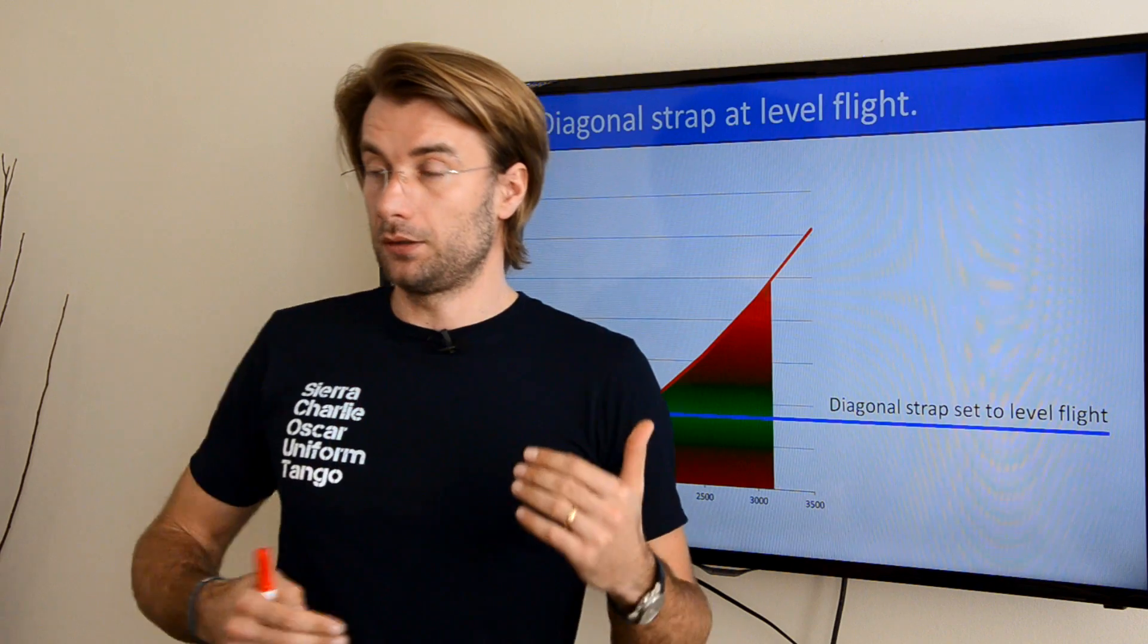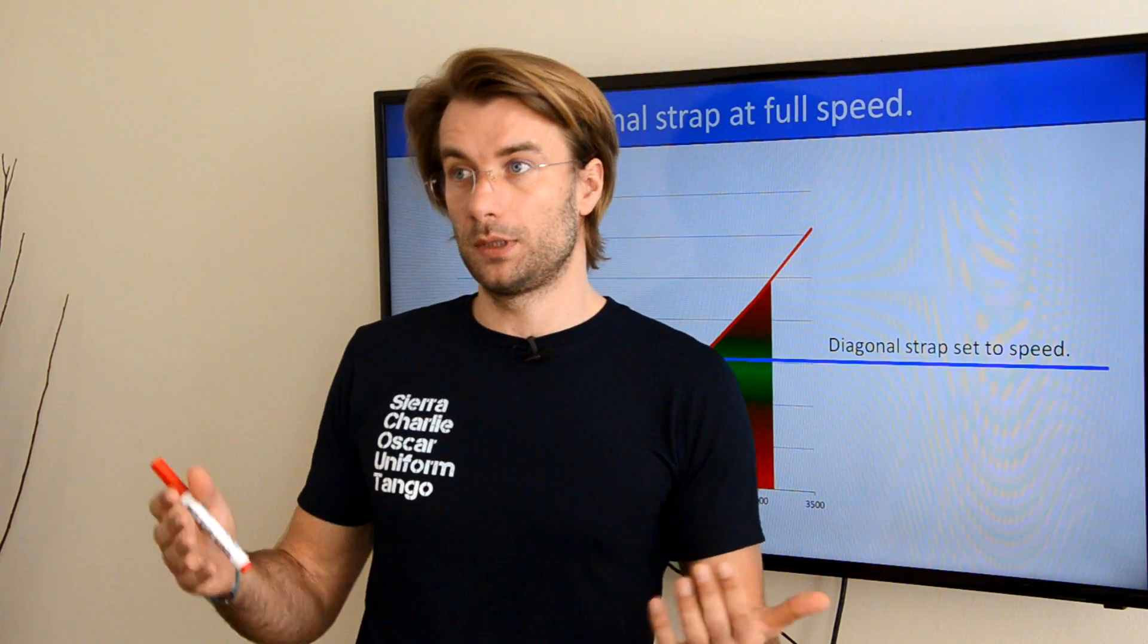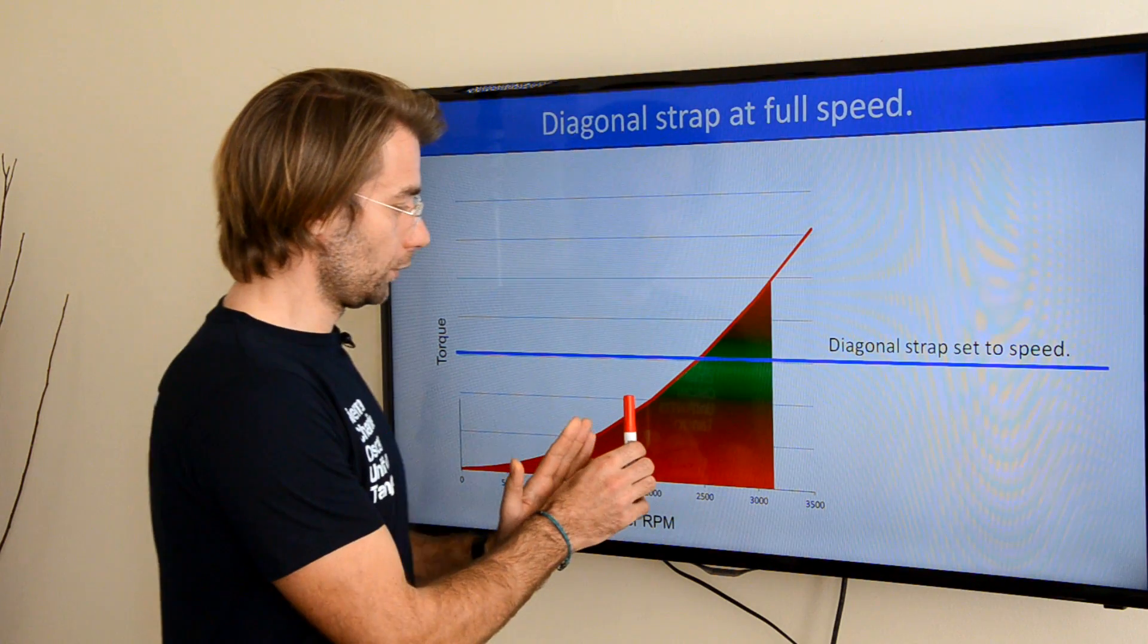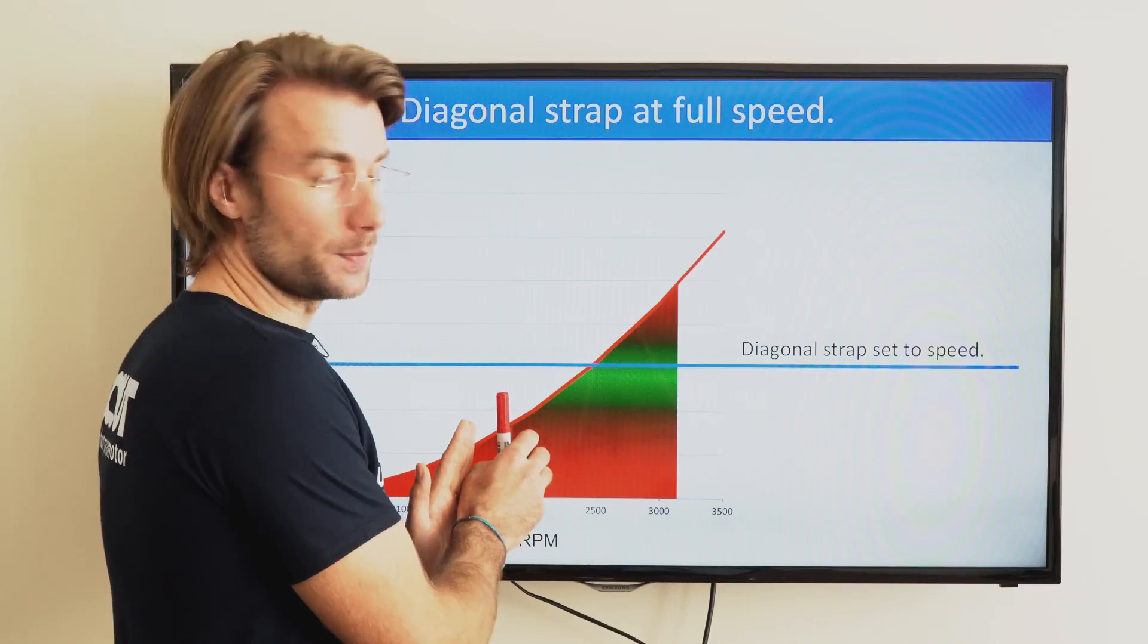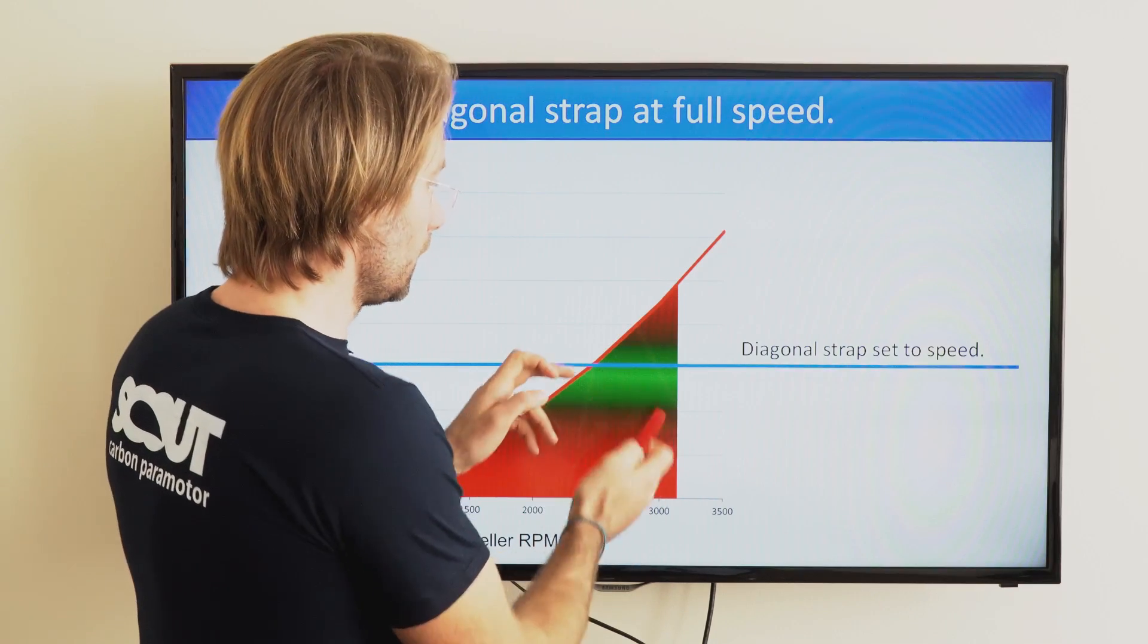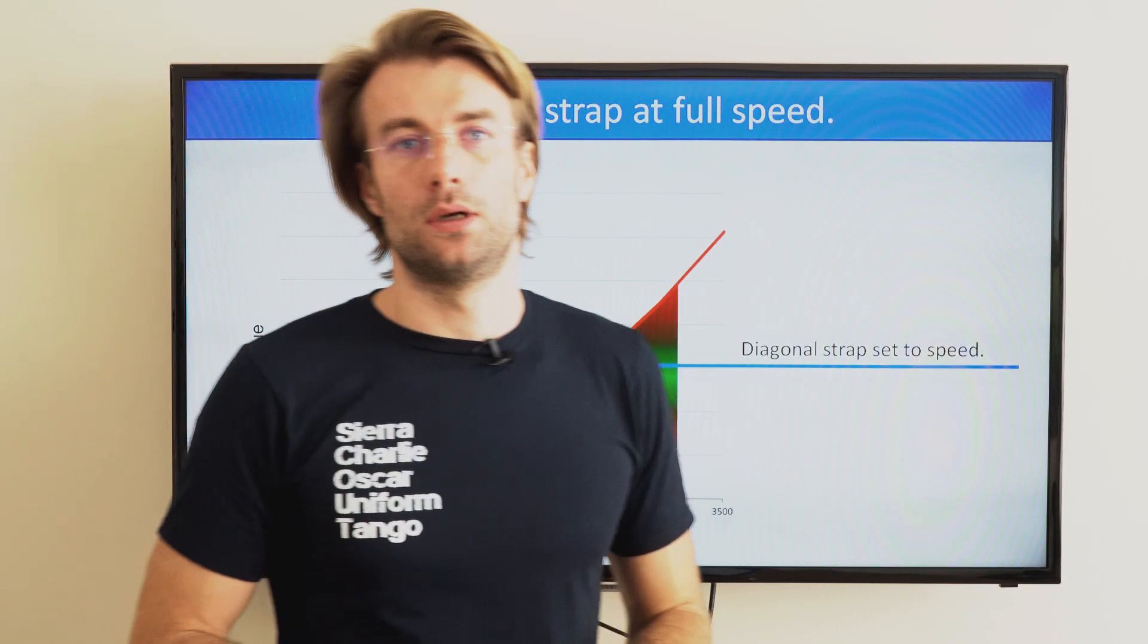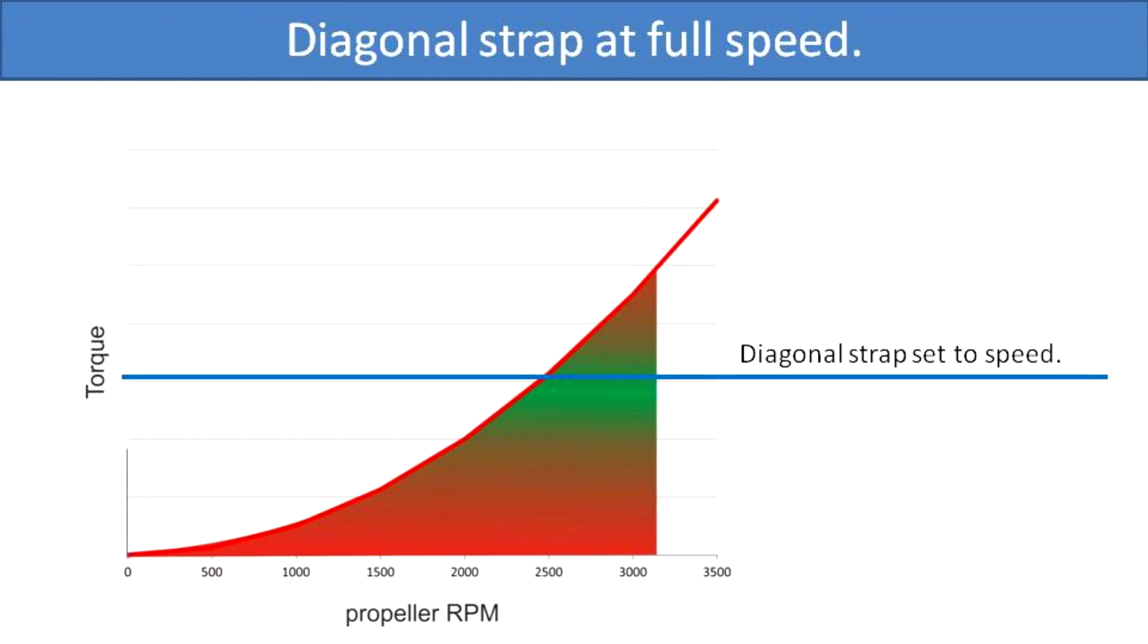Luckily, the diagonal strap is adjustable. So if I need to change the power permanently, that is to go from level flight at trim speed to full speed bar and trimmers, I need more rpm, I can adjust the diagonal strap to match the torque that I'm facing at that moment.